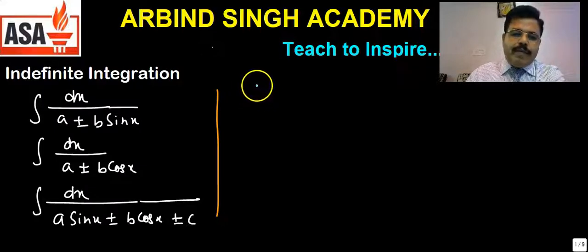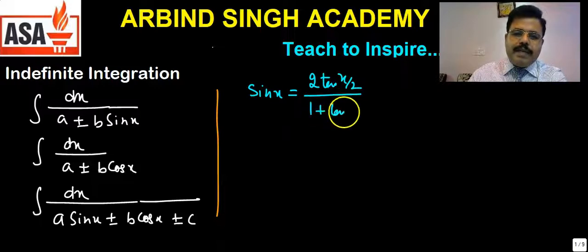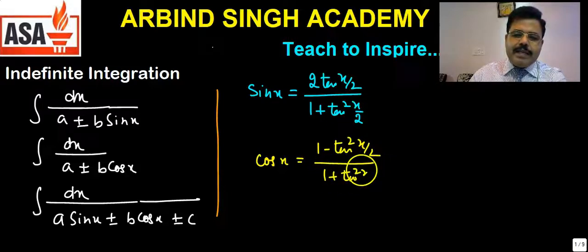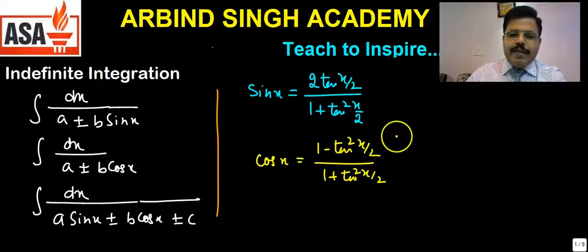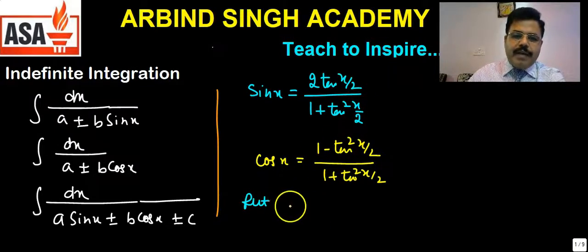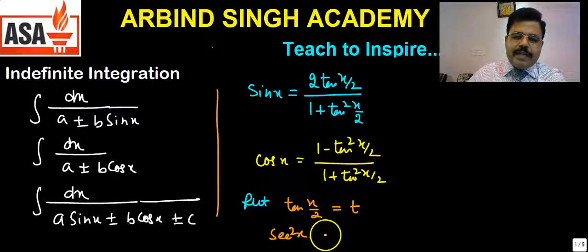What we need to put is: sin x = 2tan(x/2) / (1 + tan²(x/2)), and cos x = (1 - tan²(x/2)) / (1 + tan²(x/2)). After that, we put tan(x/2) = t. Then sec²(x/2) · (1/2) dx = dt, so sec²(x/2) dx = 2dt.